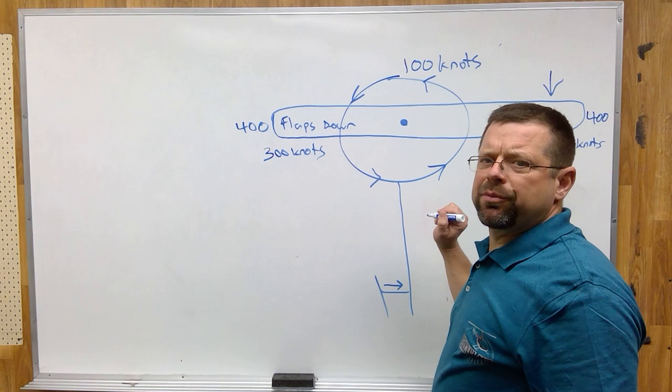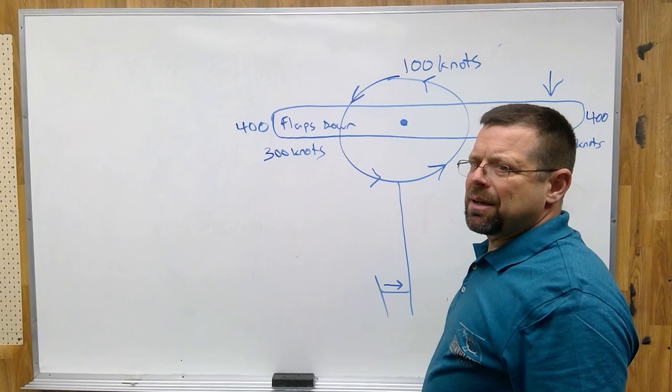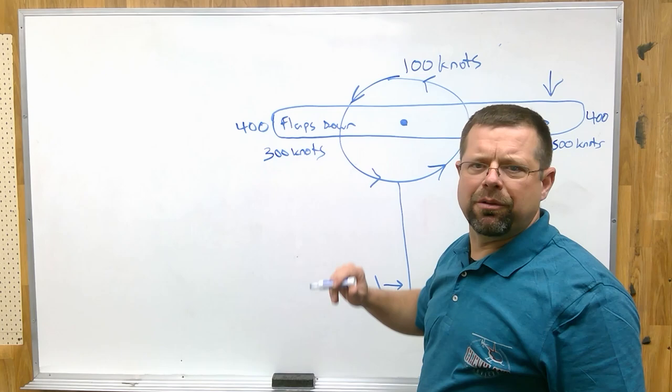Now, different rotor systems handle this differently. What we have pictured here is a two-bladed helicopter similar to a Robinson, and this would be a semi-rigid system. So when one blade flaps up, one blade flaps down.